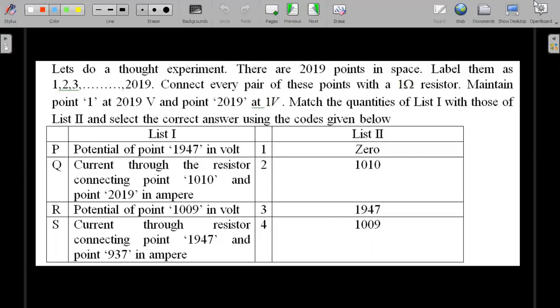Here's the formal wording. Let's do a thought experiment. There are 2019 points in space, label them as 1, 2, 3 to 2019. Connect every pair of these points with a one ohm resistor. Maintain point one at 2019 volts and point 2019 at one volt. Then under this scenario there will be some currents flowing through this particular grid or network of circuit. Match the quantities of list one with those of list two and select the correct answer using the codes given below.